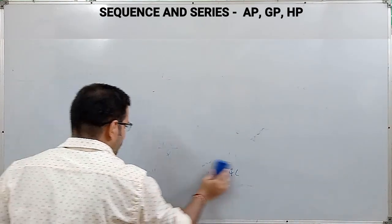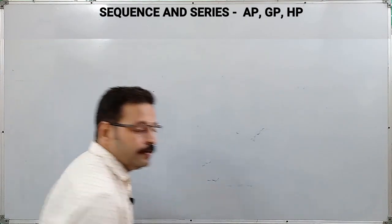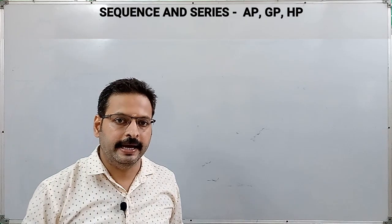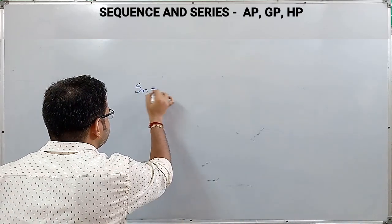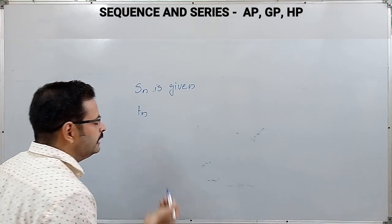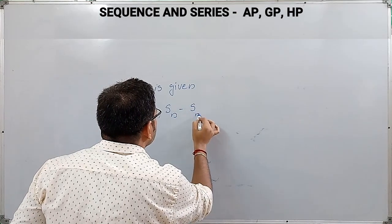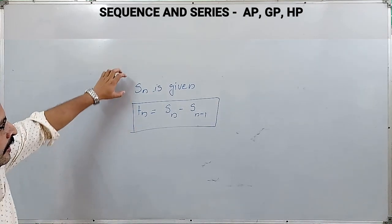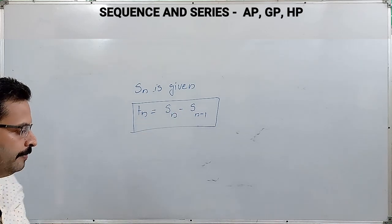One more useful formula: if Sn — the sum of n terms of AP — is given and we have to find the nth term Tn, then the formula is Tn = Sn − S(n−1).